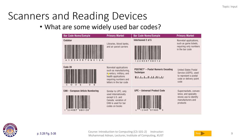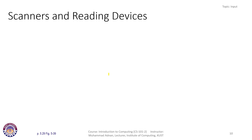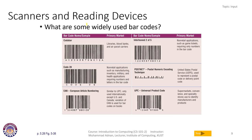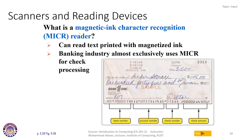Another type of input device is the Magnetic Ink Character Recognition (MICR) reader, which can read text printed with magnetic ink. For example, on a bank check with human-written text, the MICR reader has the ability to read that text. The bank industry almost exclusively uses MICR for check processing — reading the bank number, account number, check number, and check amount — saving a lot of time and energy for bank employees.